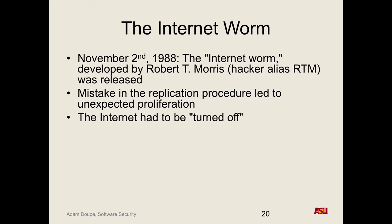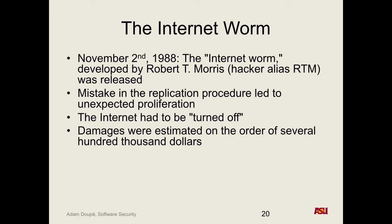How did they fix it? They turned everything off. They'd try to patch, bring things back up, and it would get exploited right away. They couldn't even use computers to talk about the problem — they had to physically call people. They basically shut everything down, had everyone patch, then brought everything back up. Damages were estimated at several hundred thousand dollars. If you turned the internet off for a day today, losses would be unimaginably higher.